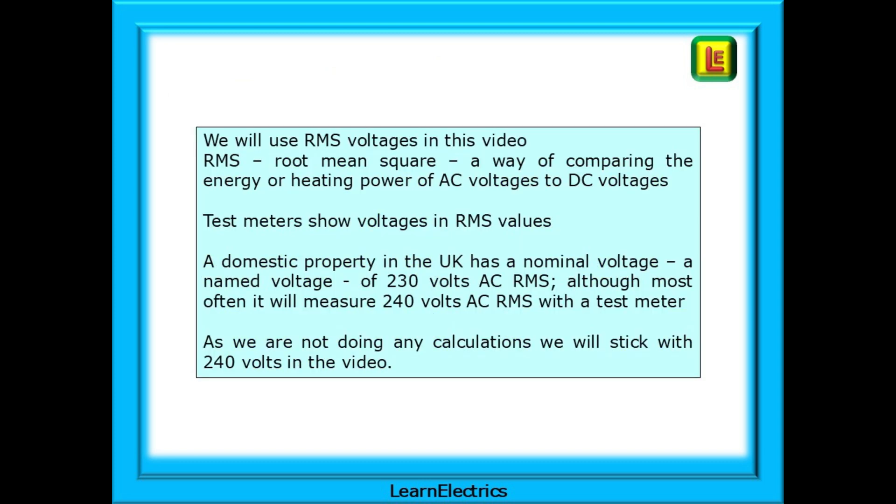When talking about alternating waveforms, we need to know what levels of voltage we are discussing. We will use RMS voltages in this video. RMS, or root mean square, is a way of comparing the energy or heating power of AC voltages to DC voltages. Your test meters will show voltages in RMS values, not peak to peak.